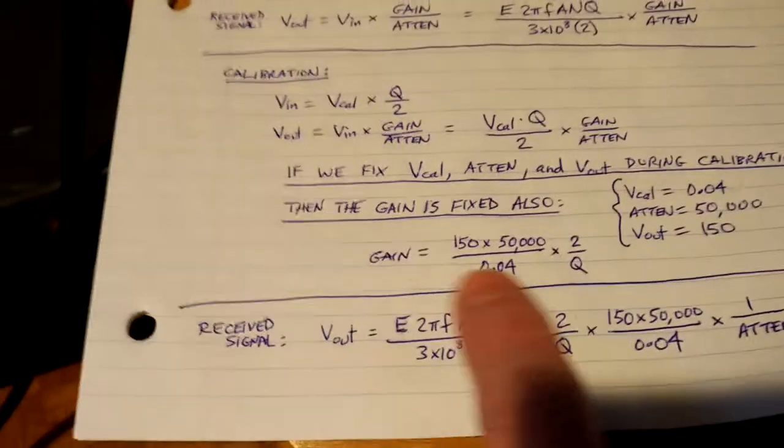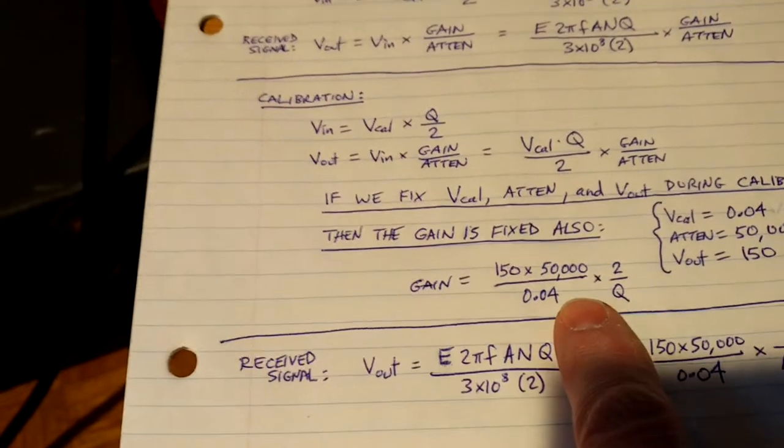Now, since we've got the gain factor for calibration, and that's fixed now, so you adjust the gain here to get that 150 when you're calibrating, and then you don't touch it anymore.